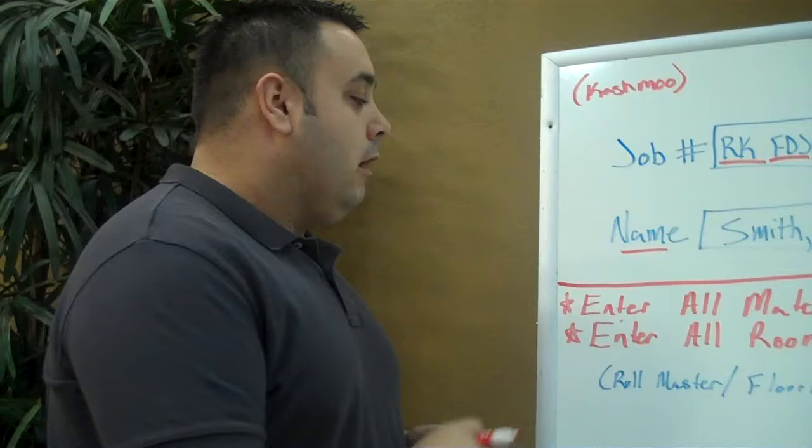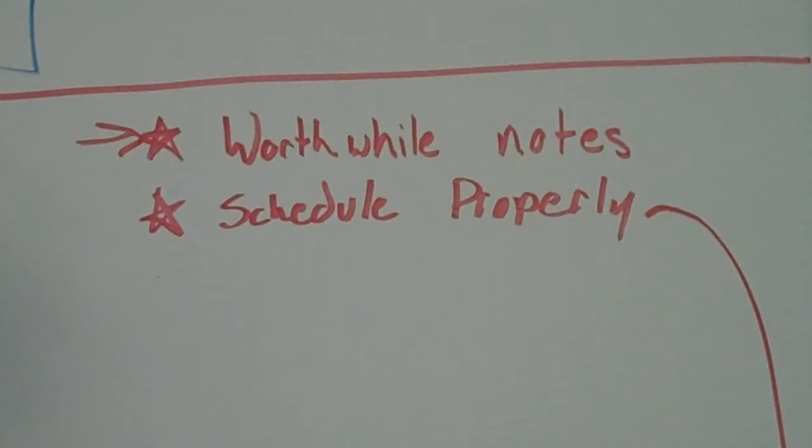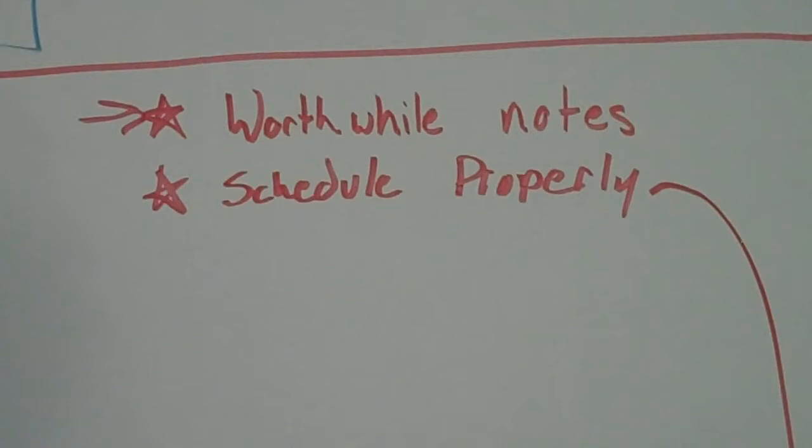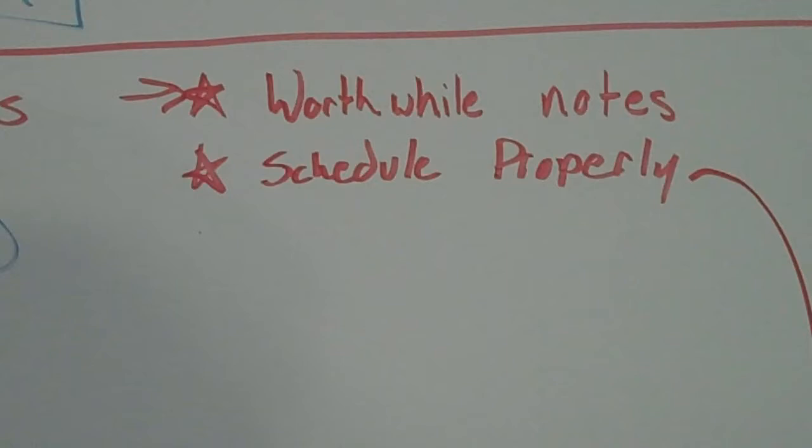We've talked about this many times, and I feel like when we're good at this one, our closure rate on site goes through the roof: leave worthwhile notes. If there's any chance of the estimator closing on site, give him the notes that will help him do that. This is very important. The more informed they are, the better. They don't have a rapport with the client like you do — they don't know them from Adam. So the more information we can give them regarding what the job needs, who this customer is, what their budget is, things of that nature, the better.